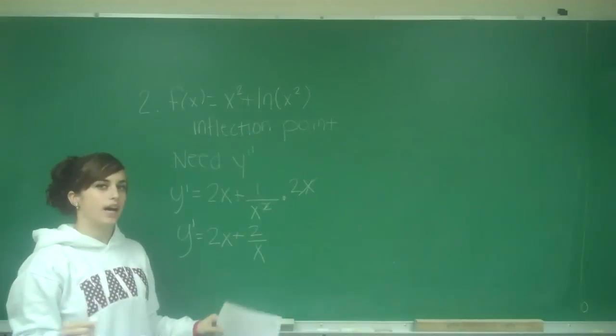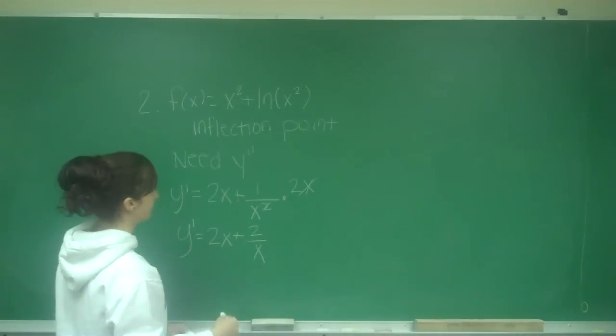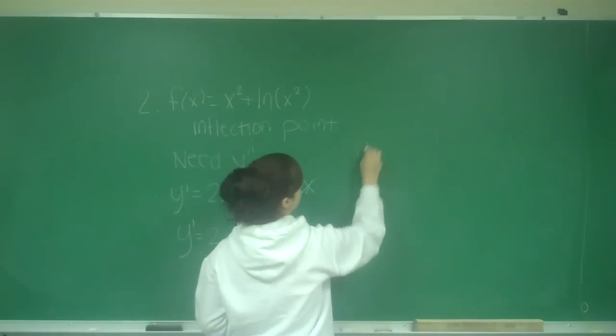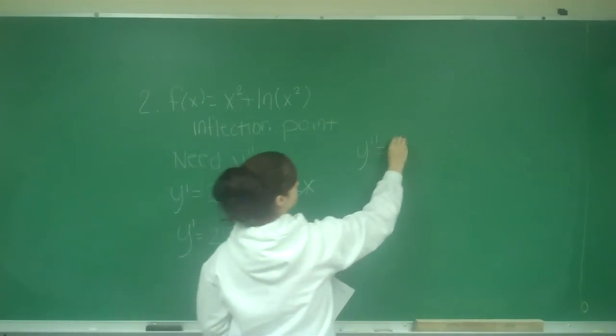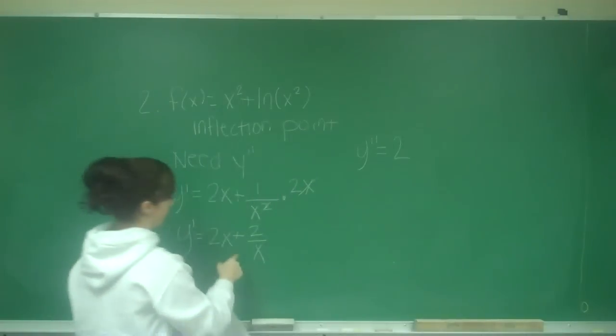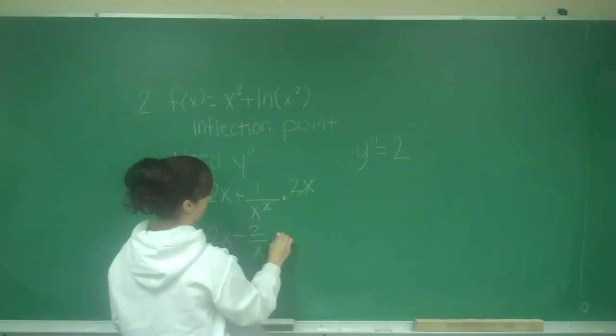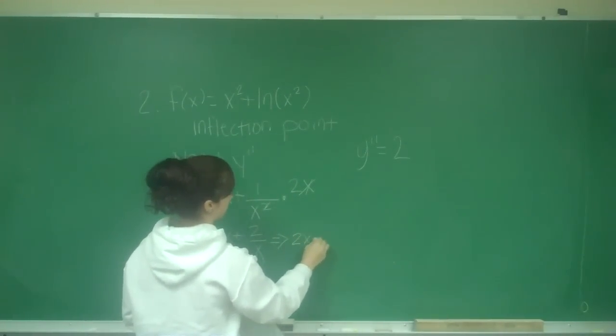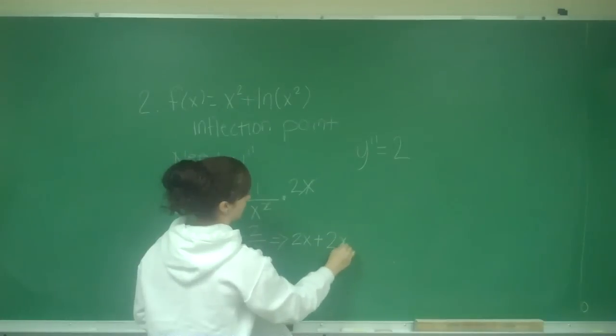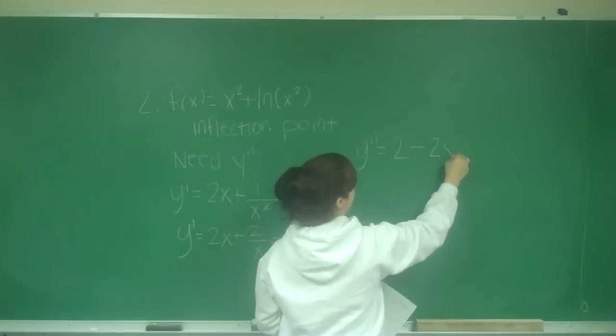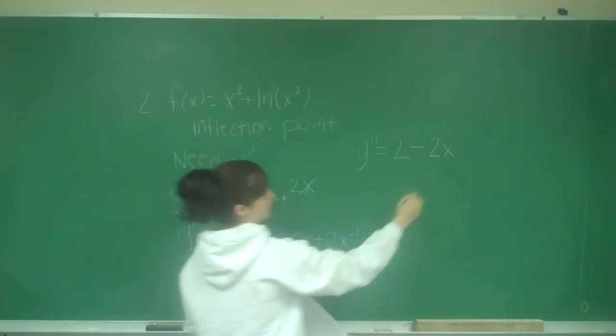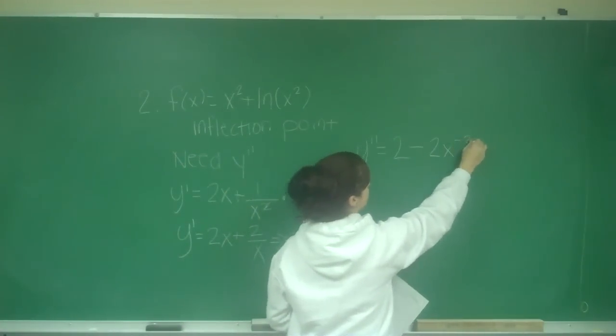That's the first derivative, but I need the second derivative. So y double prime, the derivative of 2x is 2. This is the same as 2x plus 2x to the negative 1, so I bring down my exponent: minus 2x, and then I subtract 1, so I have to the negative 2.